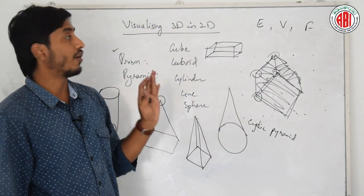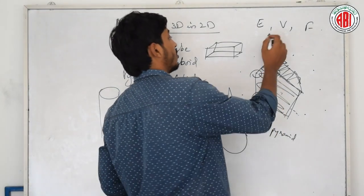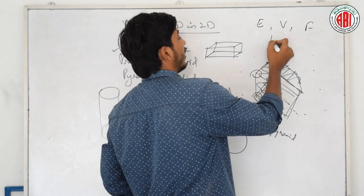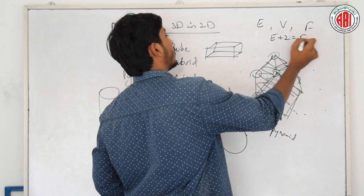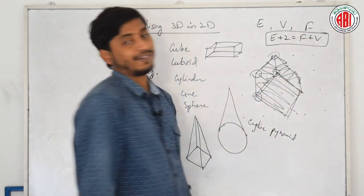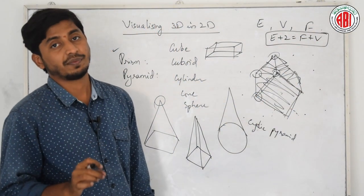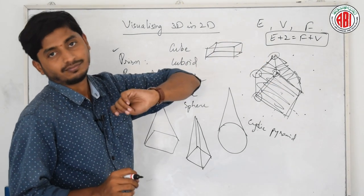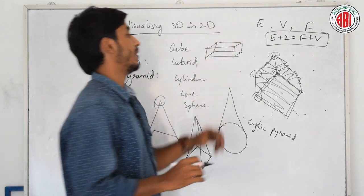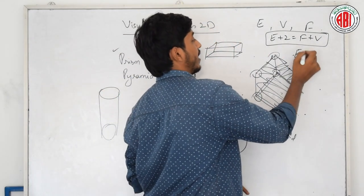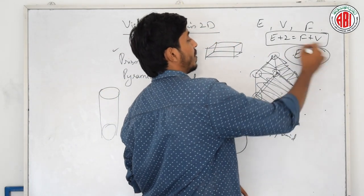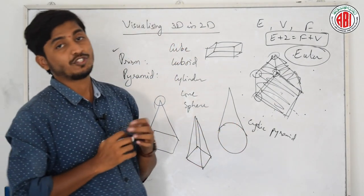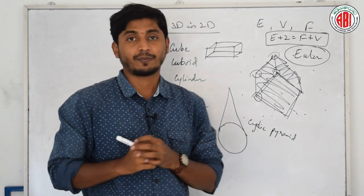These all are always given in a ratio like E plus 2 is equal to F plus V. This should be satisfied for any shape. If not satisfied, the shape is not formed. This popular relation is given by Euler and is popularly called as Euler's geometrical relation.